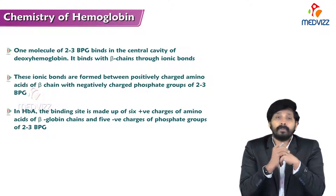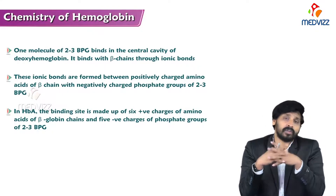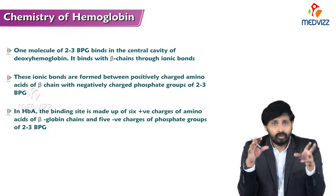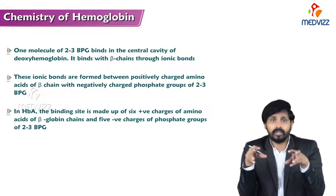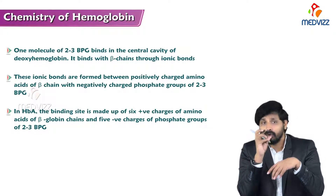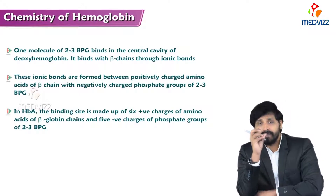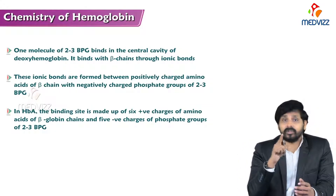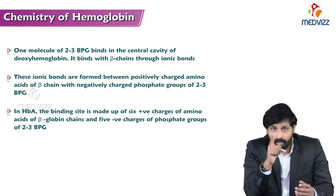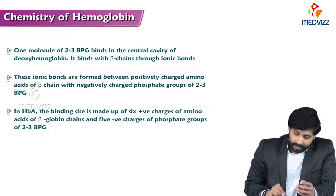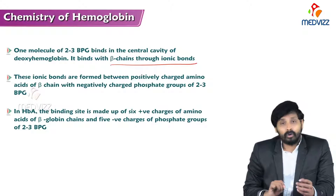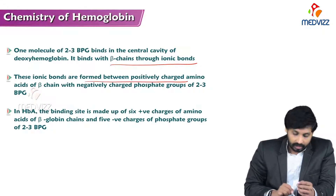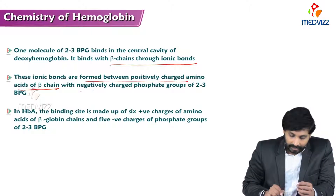As discussed in the structure of hemoglobin, four polypeptide globin chains — 2 alpha and 2 beta chains — are joined together with a central cavity. This central cavity is important because 2,3-BPG binds to it in deoxyhemoglobin, especially to the beta chains, through ionic bonds.